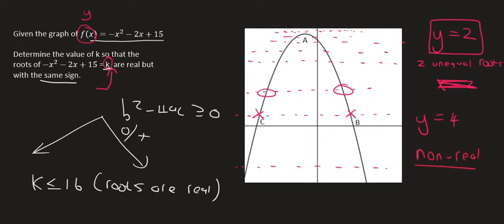So k, they told us that k must be any number that is less than or equal to 16. So I'm guessing that this y value up at the top here is most likely 16. Let's quickly confirm that.